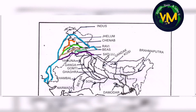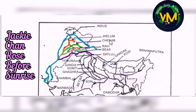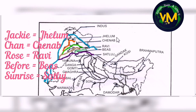Now how to learn the Indus tributaries easily? Remember the sentence: 'Jackie Chan rose before sunrise.' J stands for Jhelum, Chan for Chenab, Rose R for Ravi, Before B for Beas, and Sunrise S for Sutlej. So remember: Jackie Chan rose before sunrise. Easy, right?